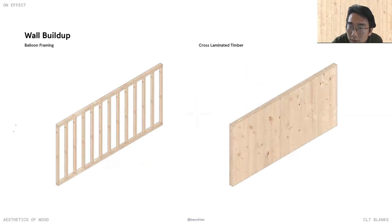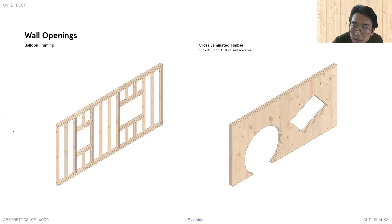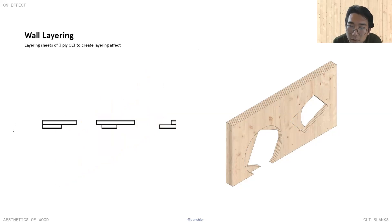Balloon framing has always been the standard suburban house construction type in America — a series of two-by-four sticks rigidly lined up create walls and framing. But what differences can CLT as a standardized nine-foot by 50-foot length create? One of the key differences the house wants to focus on is openings. The balloon frame is constrained to frames while the CLT can be freely cut and milled up to 40% of the surface area. The project's interest lies in layering up a series of three-ply blanks to overlap and compose shapes while adding structural integrity.